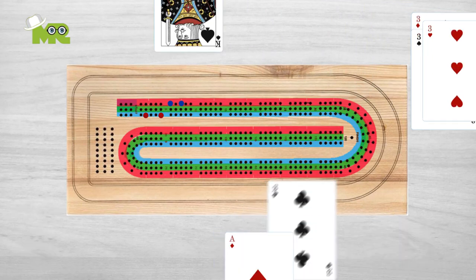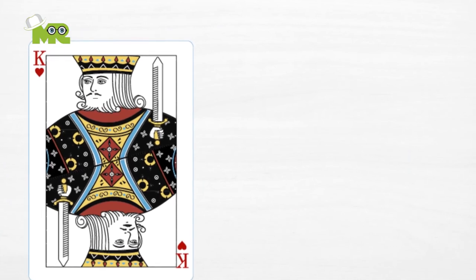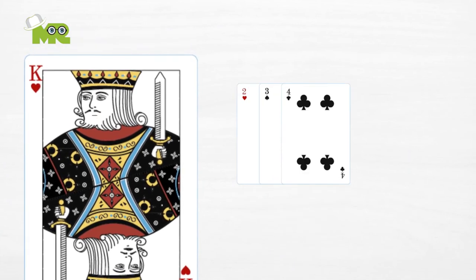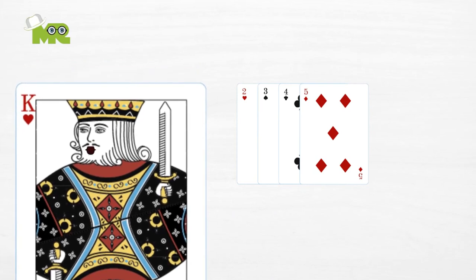If a player plays four matching cards in a row, a double royal pair is scored and they get 12 points. Playing a card that creates or continues a run of three or more cards of consecutive rank gives you points equal to the number of cards in that run.